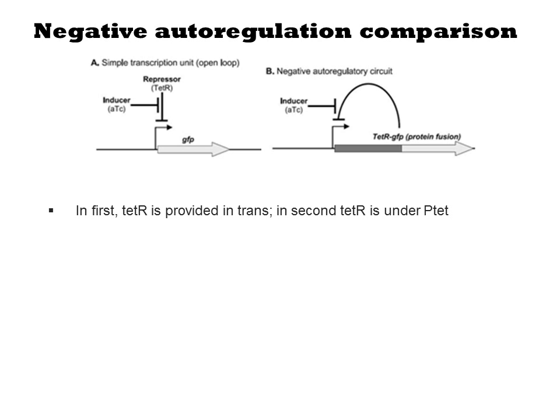In the other case, the negative autoregulatory circuit, the promoter is still a TET promoter, but TETR is being expressed from a second constitutive TETR gene. GFP is also fused to TETR. Thus, expression of the TET promoter results in production of the TETR-GFP fusion protein, which then shuts down its own expression.